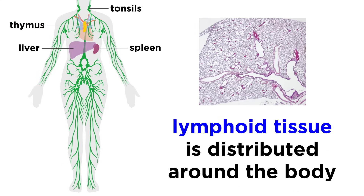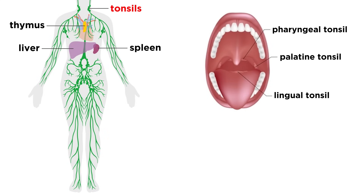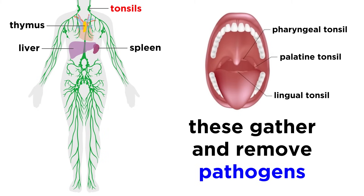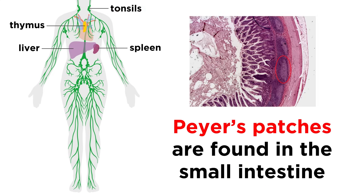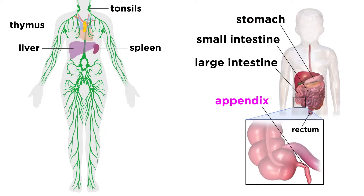Finally, though not complete organs, there are also patches of lymphoid tissue distributed around strategic locations in the body within mucous membranes. The first of these are the tonsils, distributed around the mouth and throat, and they gather and remove many of the pathogens that would enter the body through ingestion or inhalation. Peyer's patches are clusters of lymphoid follicles that serve a similar purpose, and they are found in the small intestine. Finally, we have the appendix, which is also rich in lymphoid follicles which serve to destroy bacteria.